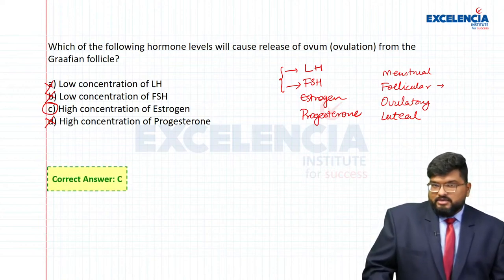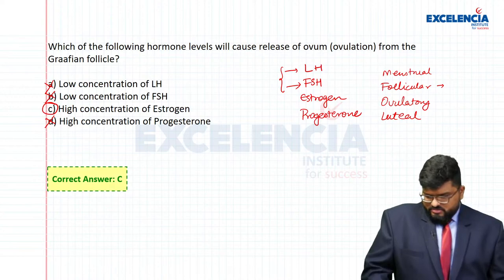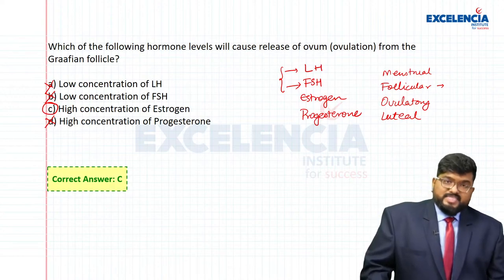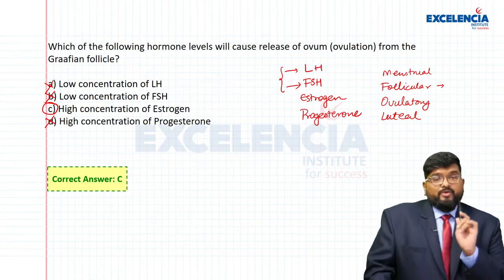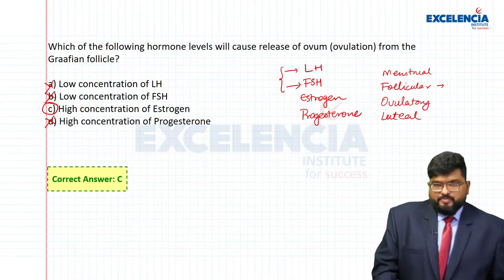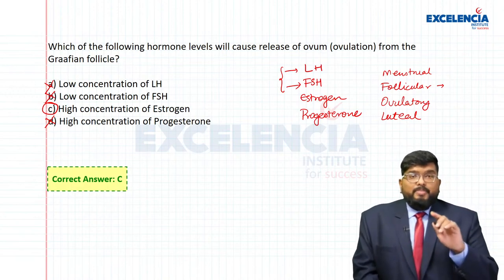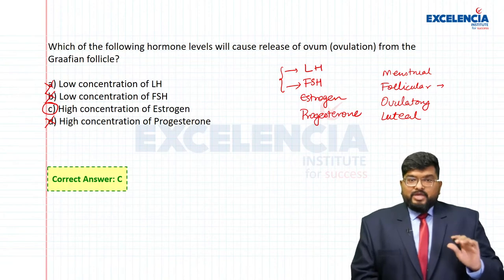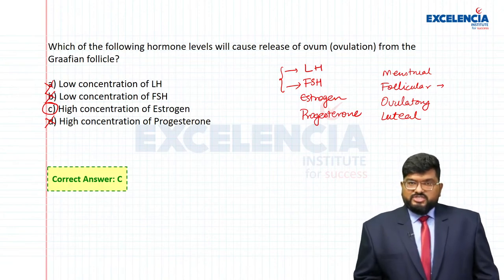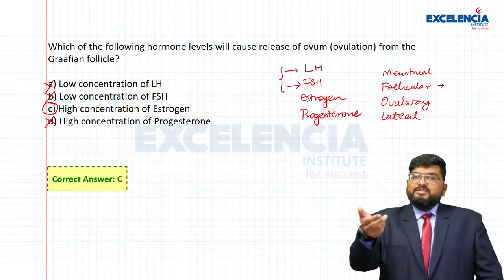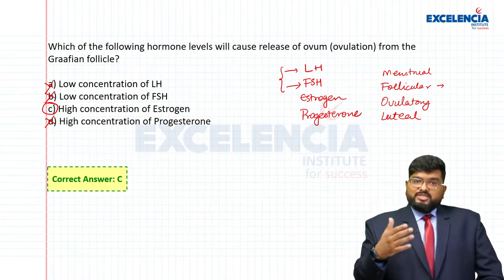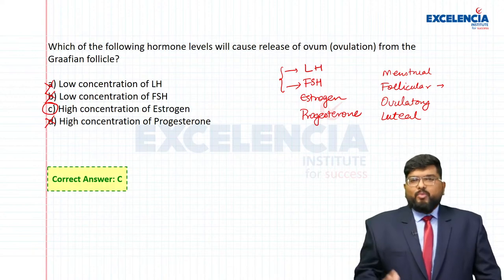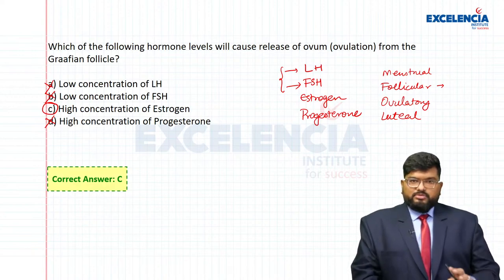If there were an option for high concentration of LH, that would be the most direct answer. However, since high concentration of estrogen indirectly triggers the LH surge leading to ovulation, and to avoid ambiguity, the correct answer in this question is high concentration of estrogen. Generally such ambiguity is avoided when it comes to options.